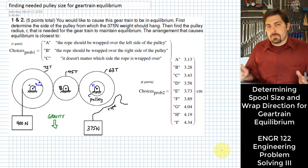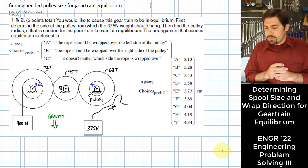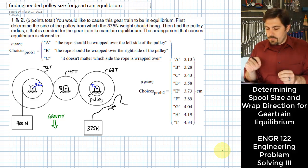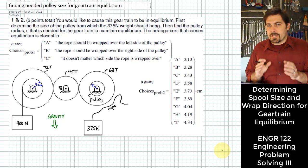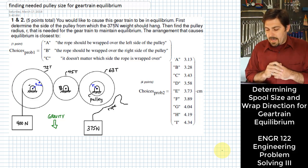Hi, I'm Mike Swanbaum, and in this problem we're going to figure out a couple things. One is, what side of a pulley, or more appropriately called a spool, should we wrap a rope around in order to keep this system in equilibrium? And second, how big should we make the radius of that pulley or spool so that it holds the whole system in equilibrium?